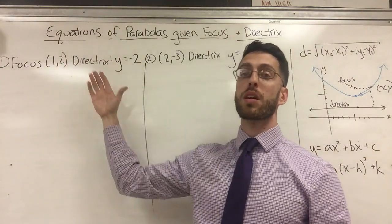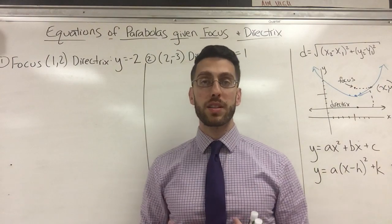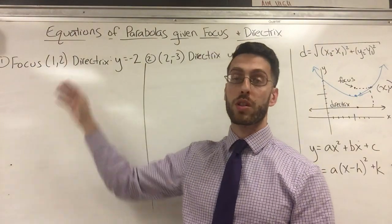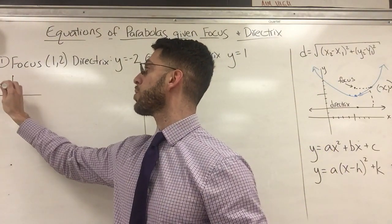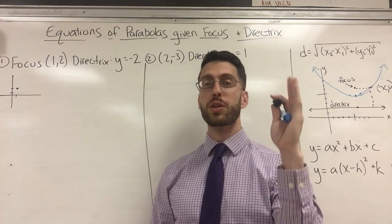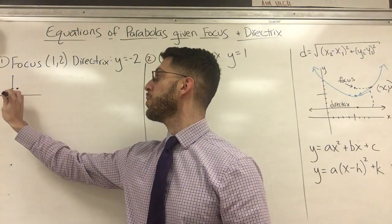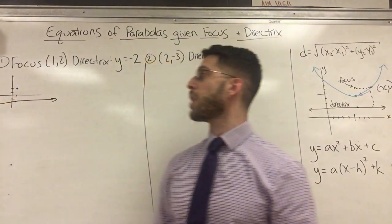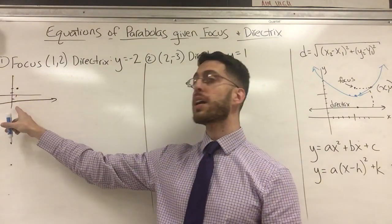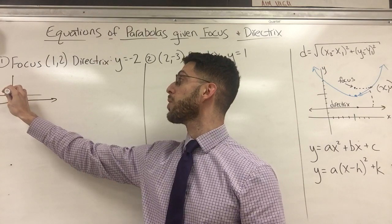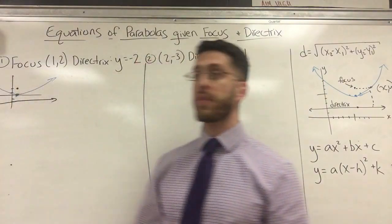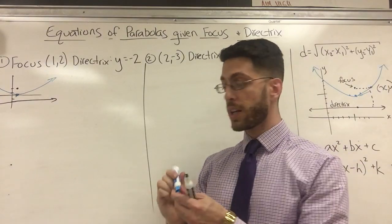You'll be given a focus and a directrix and asked to write the equation of the parabola. For example: focus is (1, 2) and directrix is y = −2. Remember y = negative two is a horizontal line down there. The middle of y = 2 and y = −2 is zero, so my vertex is at (1, 0), and the parabola opens upward from there.